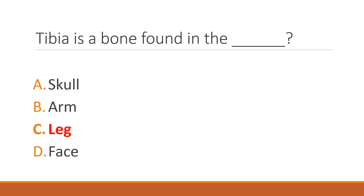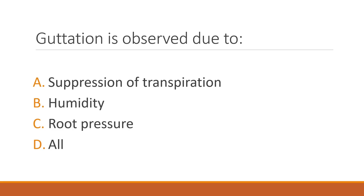Guttation is observed due to option C: root pressure. When the humidity level in the atmosphere is high and the transpiration rate is low, guttation can easily be observed. The pores through which this process occurs are called hydathodes, which are present on leaf margins.